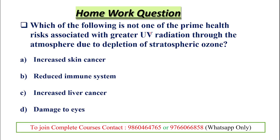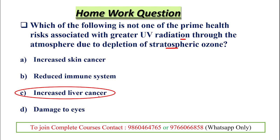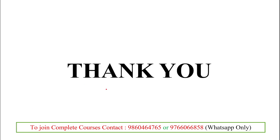The homework question: which is NOT a prime health risk associated with greater UV radiation through the atmosphere due to depletion of the stratospheric ozone layer? The correct answer is increased liver cancer — that is not a prime health risk due to greater ultraviolet radiation. That's all for today. Any queries please ask in the comment box. We will meet in the next video with another beautiful topic. Until then, thank you and have a nice day.